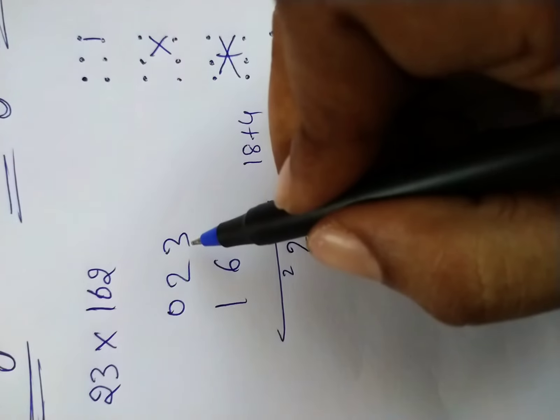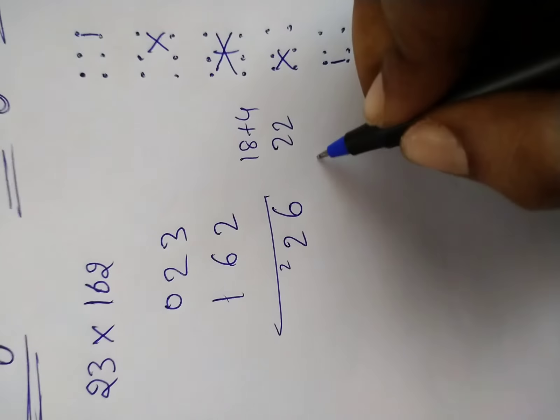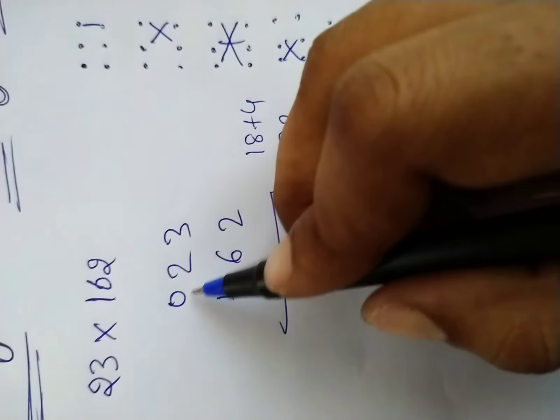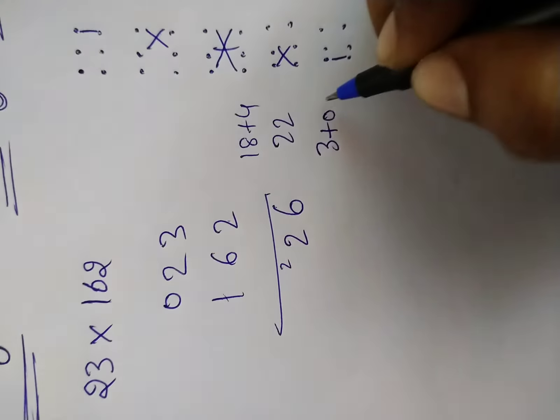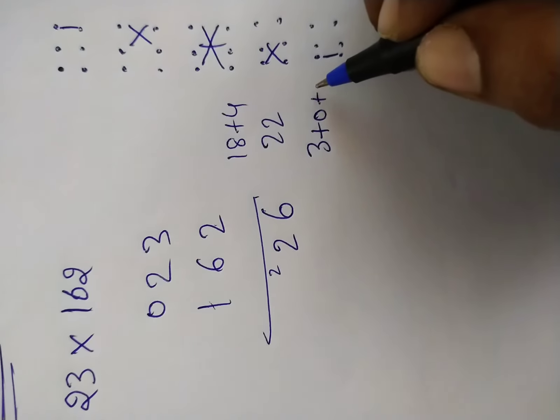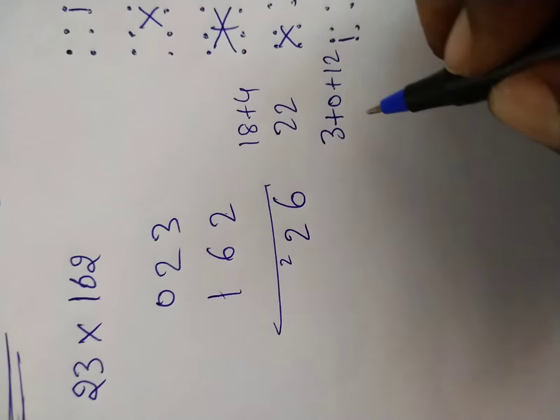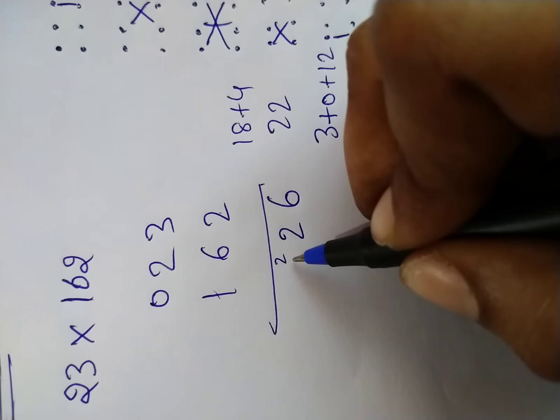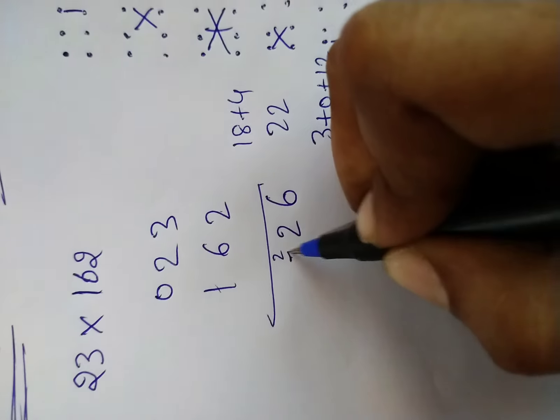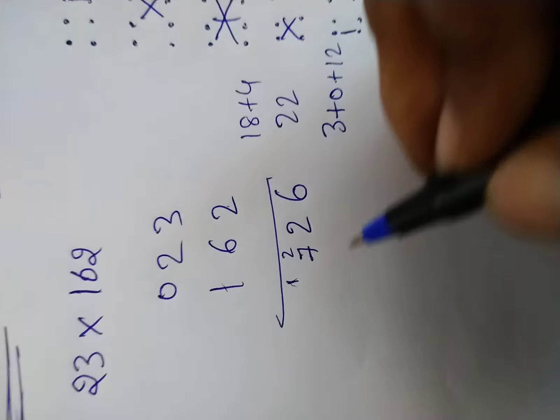Next butterfly. 3 times 1 is 3 plus 0 times 2 is 0 plus 6 times 2 is 12. 12 plus 3 is 15. 15 plus 2 carry forward is 17. 1 is carry forward.